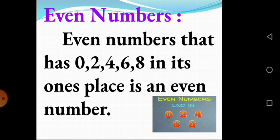First, I will explain about Even Numbers. Even Numbers that has 0, 2, 4, 6, 8 in its one's place is an Even Number. So, Even Numbers means 0, 2, 4, 6, 8 is in one's place is called an Even Number.